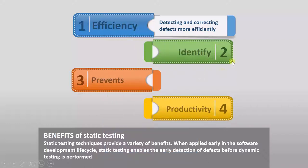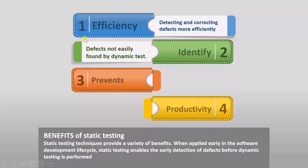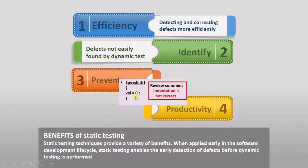The second point is identification of defects. In static testing, you can identify defects that are not easily found by dynamic testing. For example, the indentation problem — this is a problem with respect to the MISRA guidelines, which state that if you write code you must follow indentation. Such a defect cannot be found in dynamic testing because it is not a functionality failure; it is a guideline failure. Only static testing can find such defects.